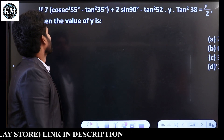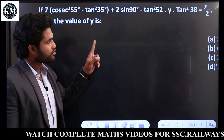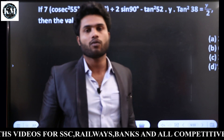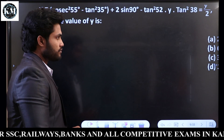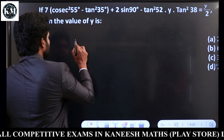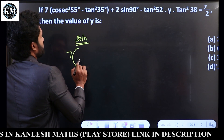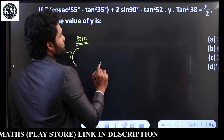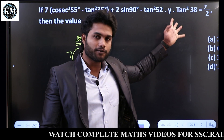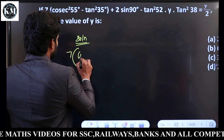Next — very easy. If 7 Cos² 55 minus Tan² 35 plus 2 Sin 90 minus Tan² 52 × y × Tan² 38, and 8 equals y by 2 — what is the value of y? Take the 7 term. The value of Tan² 52 equals Tan² 55, Tan² 38.